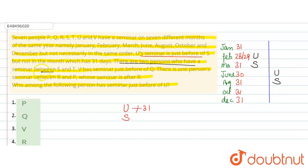Phir given hai, there are 2 persons who have seminar between S and T. To yeh raha S, 1, 2, yahan par T. Is case mein 1, 2, yahan par T. Phir given V ka seminar just before Q, so V jo hai turant Q se pehle. So 2 lagatar jagah yahan khali hai. Is case mein 2 lagatar jagah yahan khali hai.